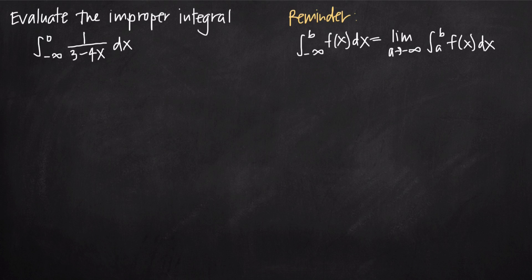In this video, we're going to be talking about how to evaluate improper integrals. In this particular problem, we've been asked to evaluate the integral on the interval negative infinity to 0 of the function 1 divided by 3 minus 4x.